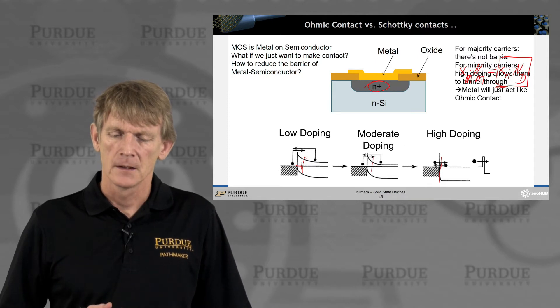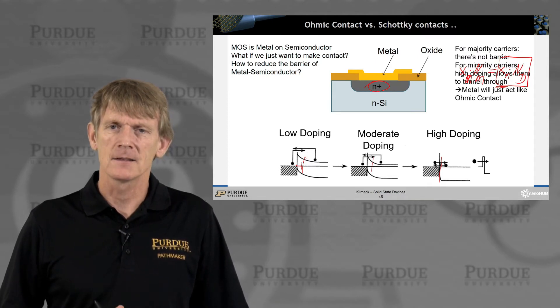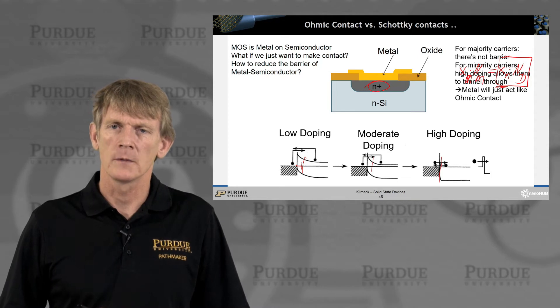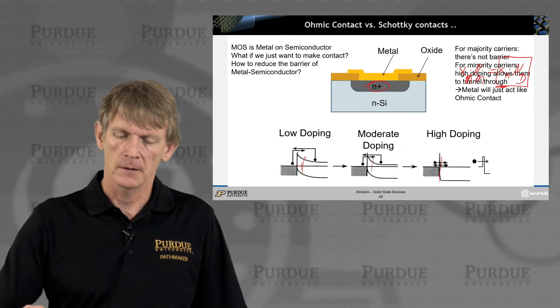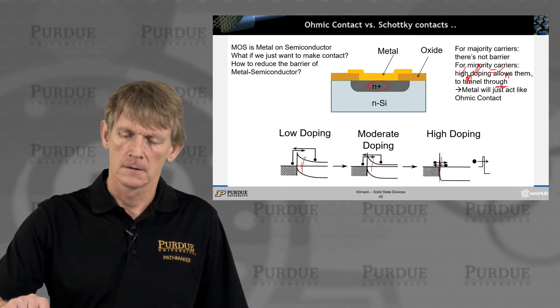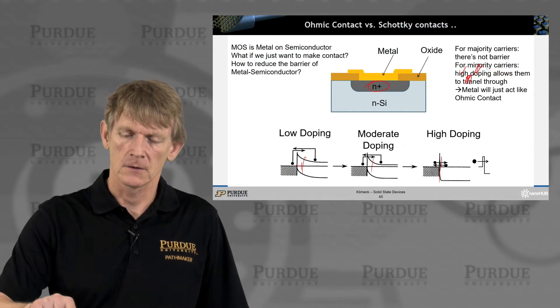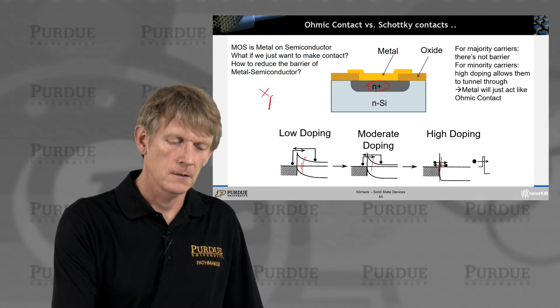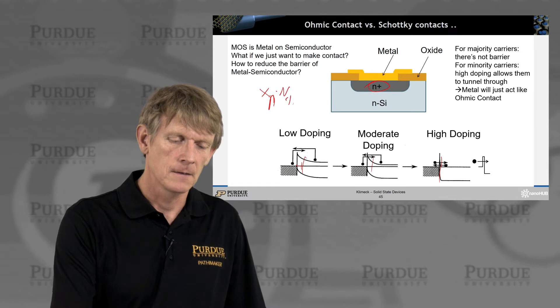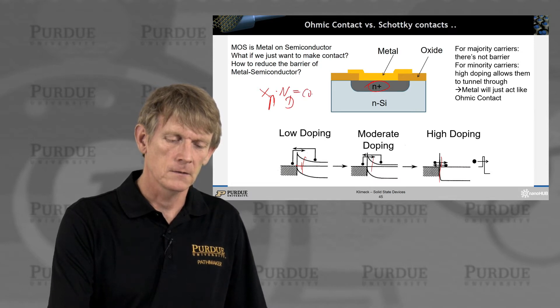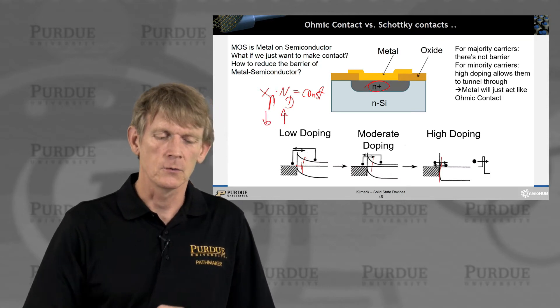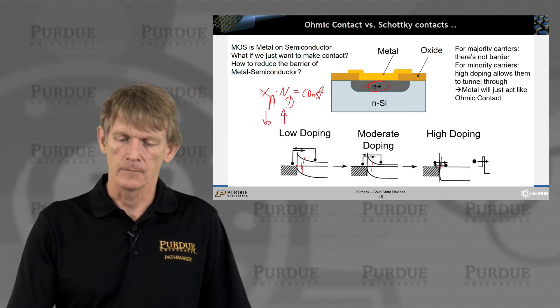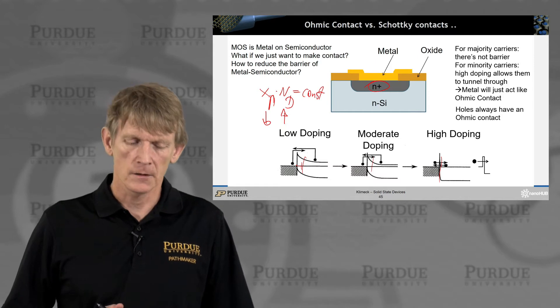All right, so in that sense, then, metals can act like an ohmic contact. Maybe I should erase this here so you can actually see it, and write my scribble here. XN times ND is constant, so you can crank up ND and therefore reduce XN.